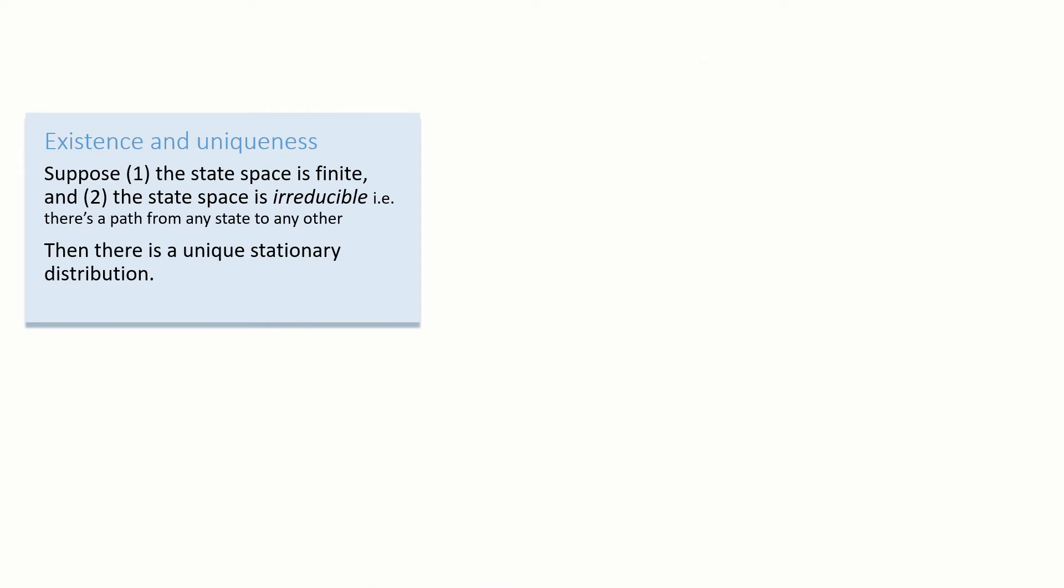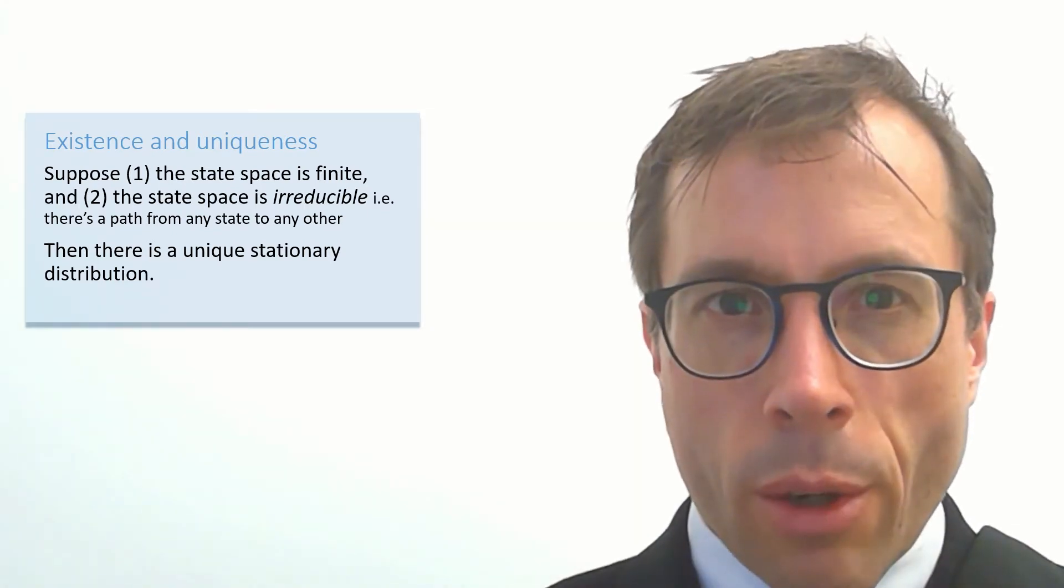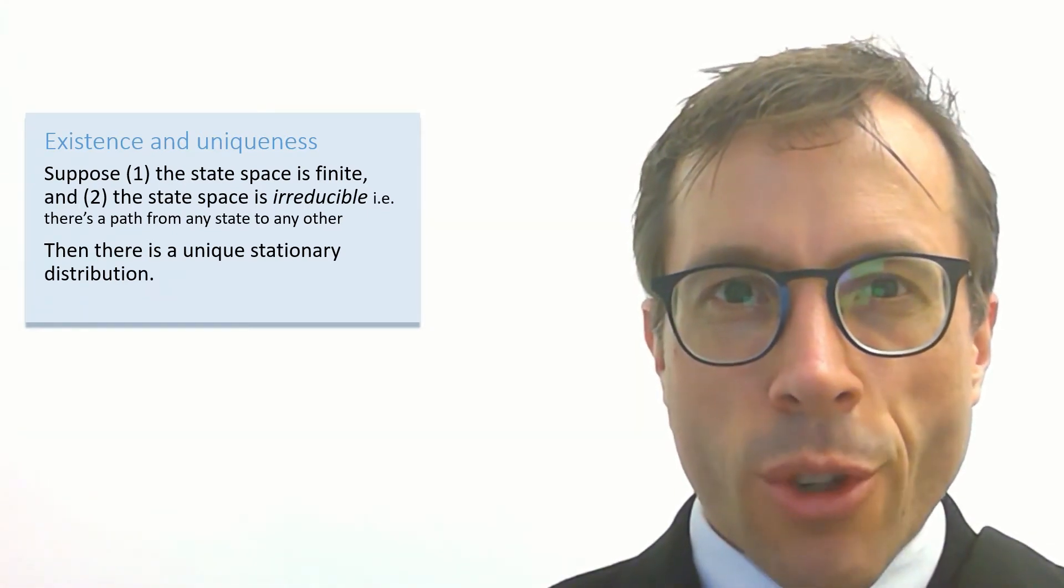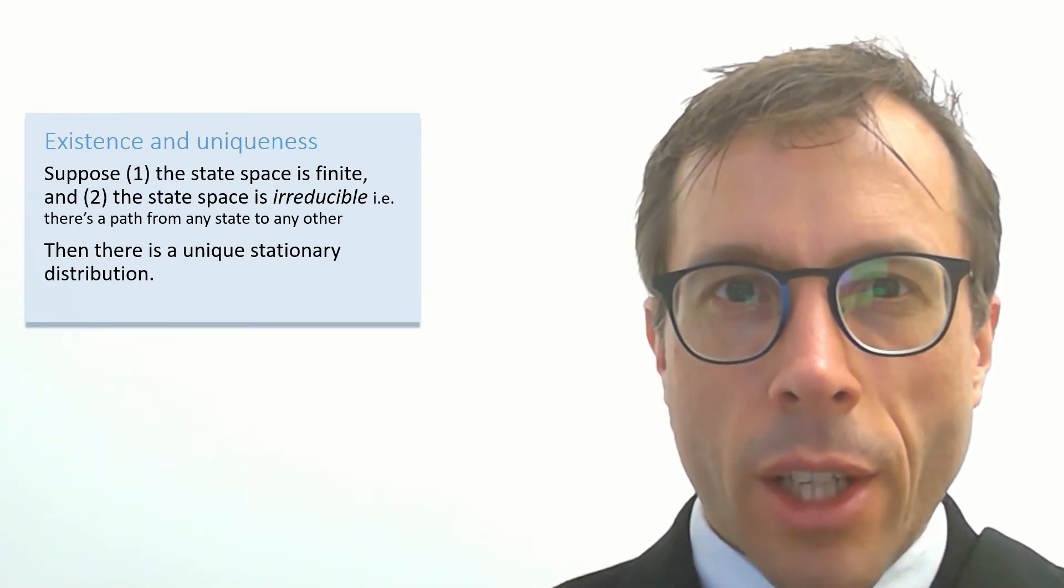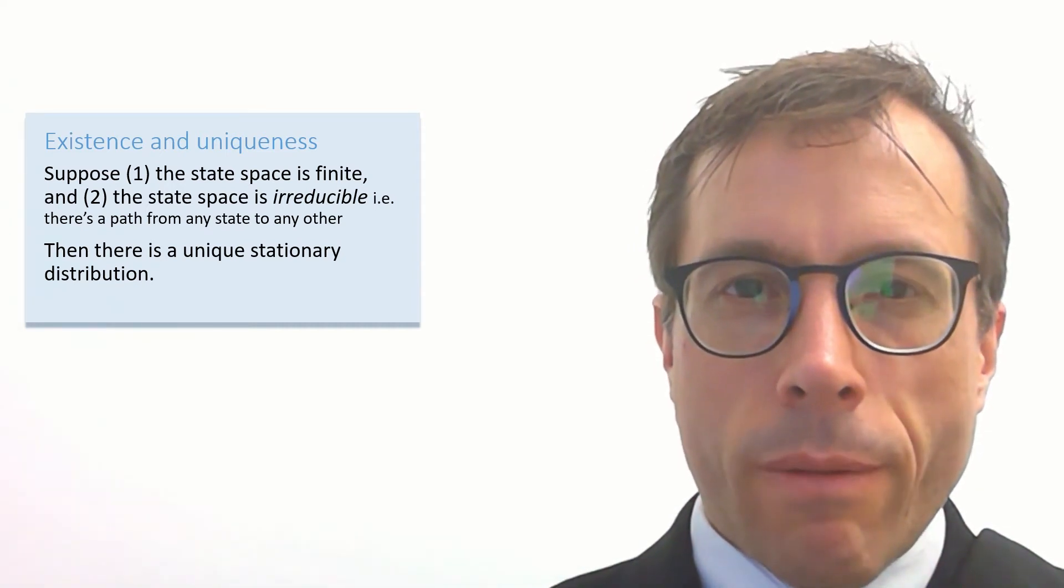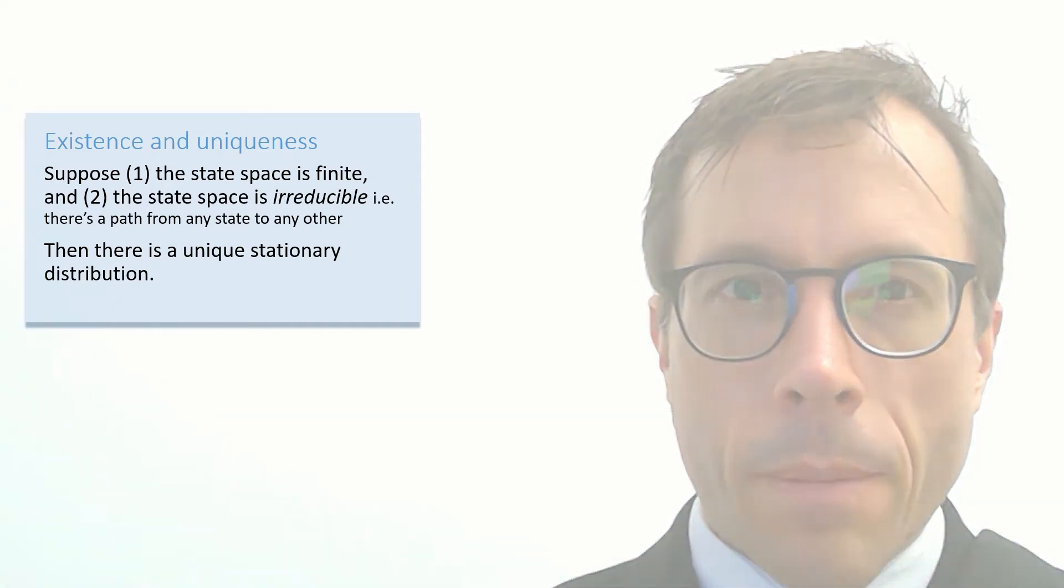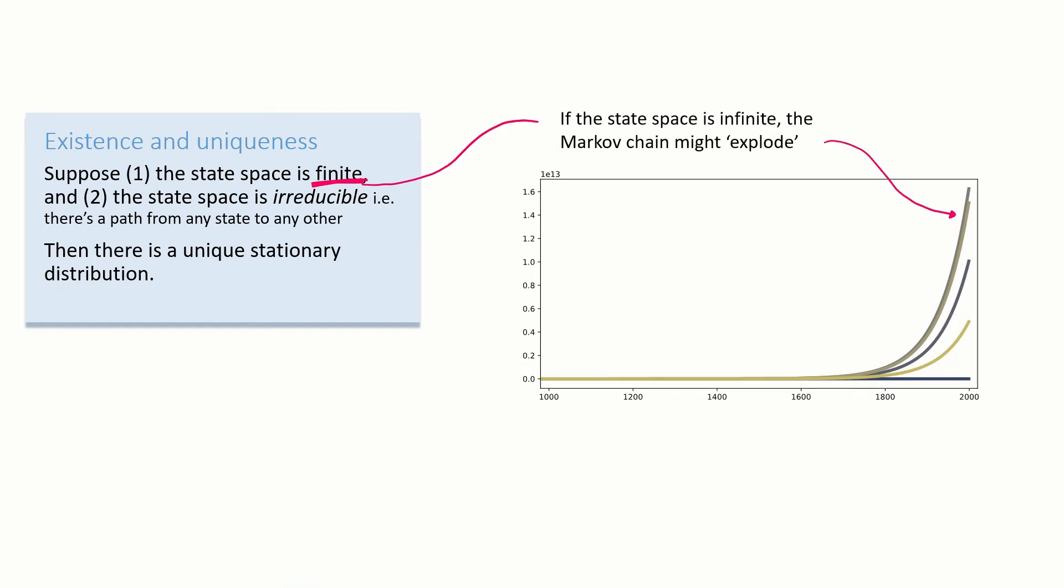Pause the video and have a read. This theorem looks very technical. It assumes two things: first, that the state space is finite; second, something called irreducibility. These conditions actually have very clear intuition behind them. Here's our epidemic model again. In the epidemic model, the state space was infinite—it was the entire set of natural numbers. When you have an infinite state space, a Markov chain can potentially explode, i.e., head off and never return, as these trajectories look like they're set to do.